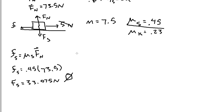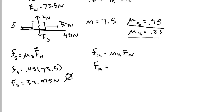The object would only move if we pulled with a force greater than 33.075 Newtons. Let's say instead of 5 Newtons, we pull with 40 Newtons — now we know the object will move. Once the object moves, we use kinetic friction: plugging in 0.23 times 73.5 gives a much lower kinetic friction force of 16.905 Newtons, which acts in the opposite direction as long as we pull with 40 Newtons.